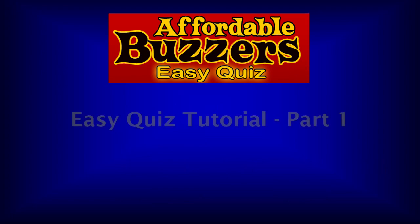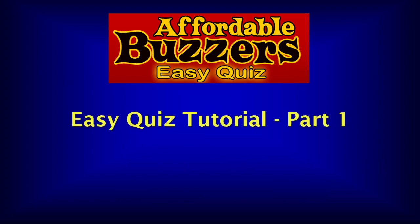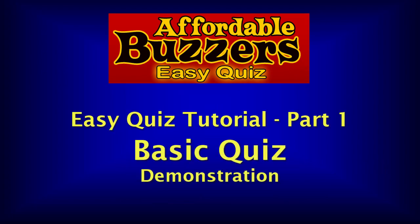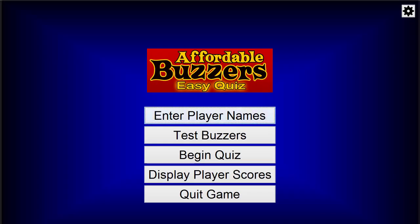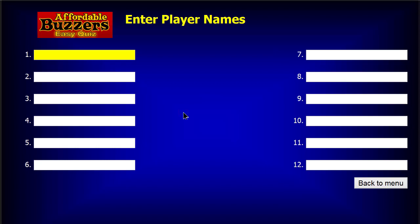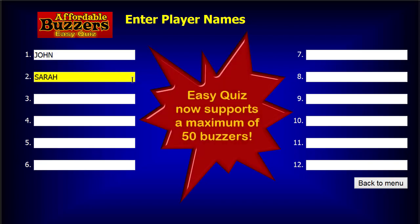In part 1 of this series, we'll demonstrate how a basic EasyQuiz is played. When you first start EasyQuiz, you'll see this simple menu. Let's start by entering the names of our players. Here we see places to enter up to 12 names. You can use EasyQuiz with as few as 2 buzzers all the way up to a maximum of 12 buzzers.